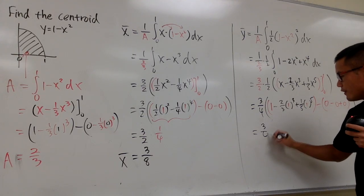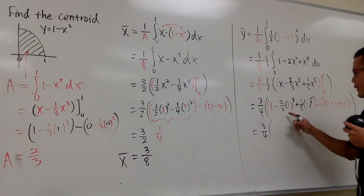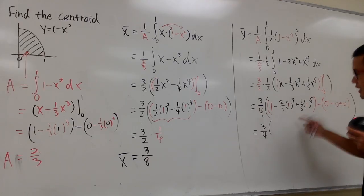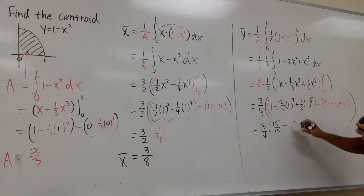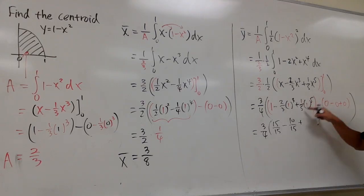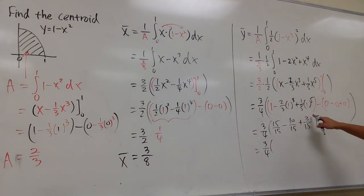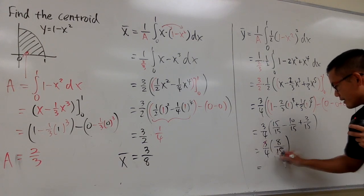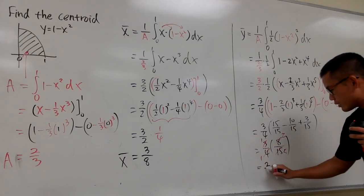So this is 3 over 4 times the inside: 1 minus 2 thirds plus 1 fifth. Getting a common denominator of 15: 1 equals 15 over 15, minus 2 thirds equals 10 over 15, plus 1 fifth equals 3 over 15. So 15 minus 10 plus 3 equals 8 over 15. Then cross-reducing 3 over 4 times 8 over 15 gives 2 over 5. This is y-bar.